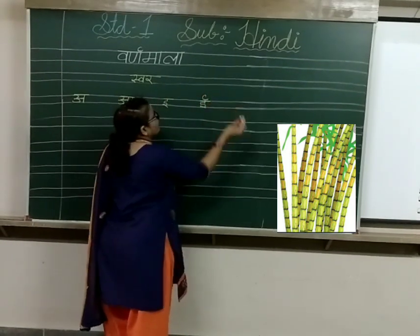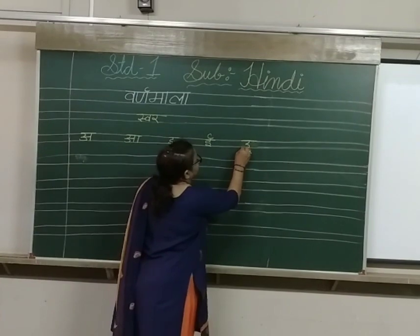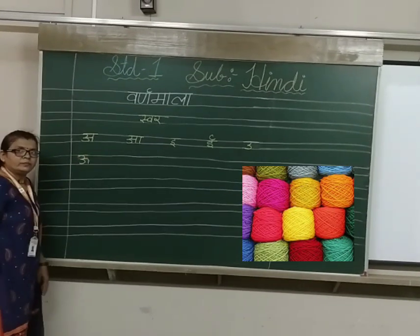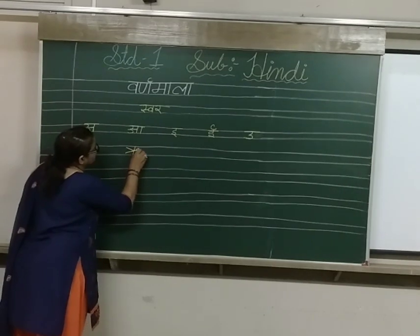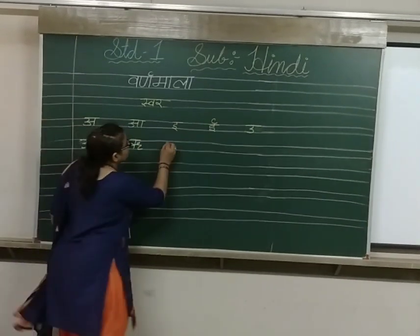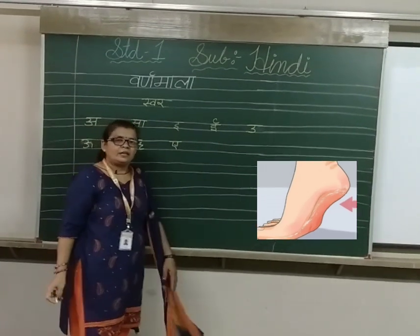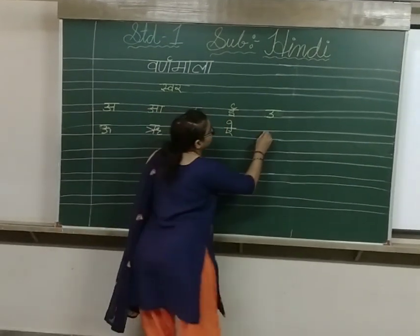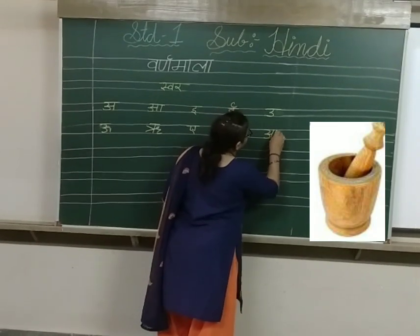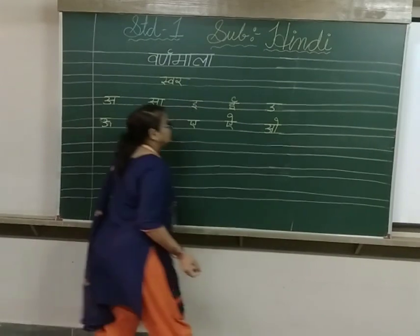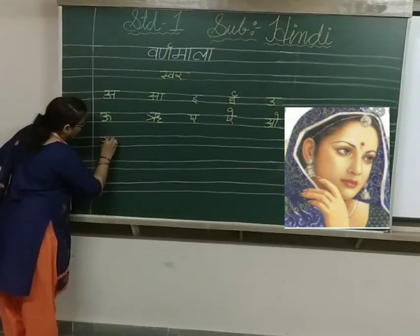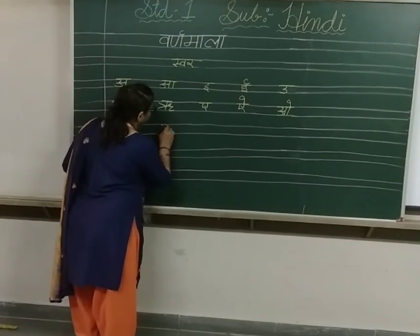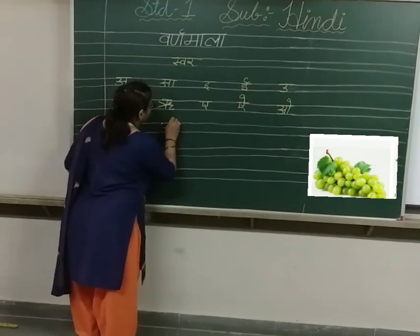अ, आ, इ, ई, उ, ऊ, ऋ, ए, ऐ, ओ, औ, अं, अः — Swar letters being recited and written in sequence.